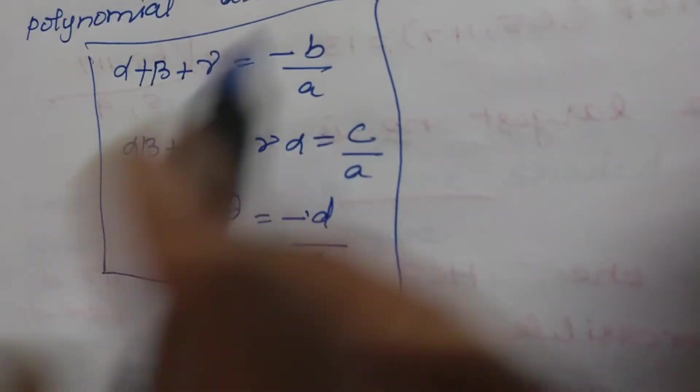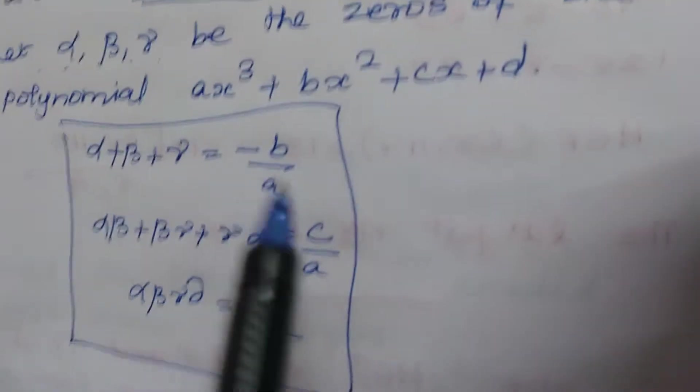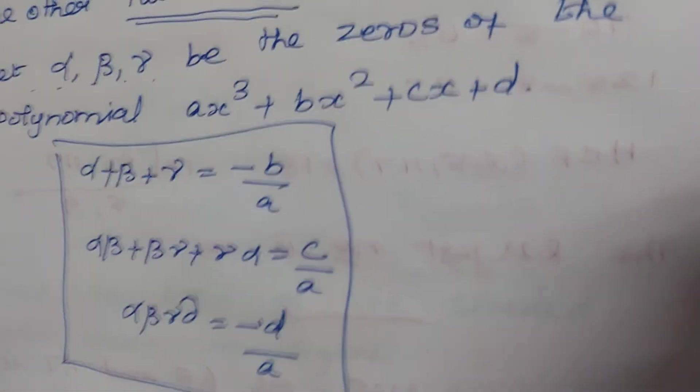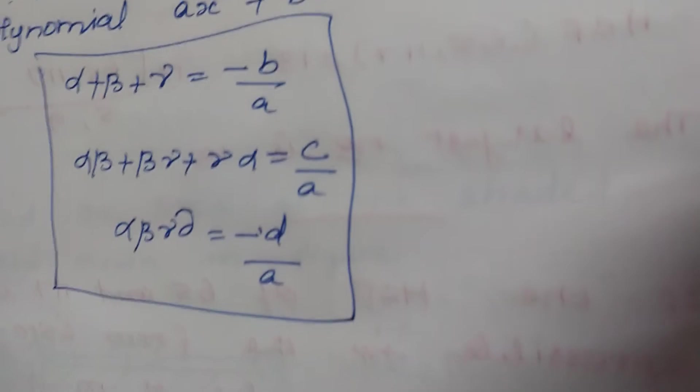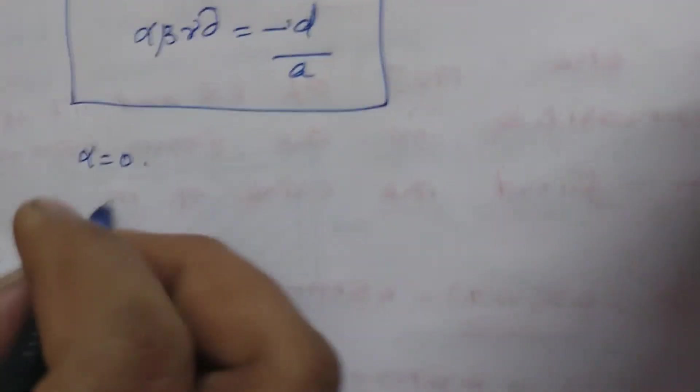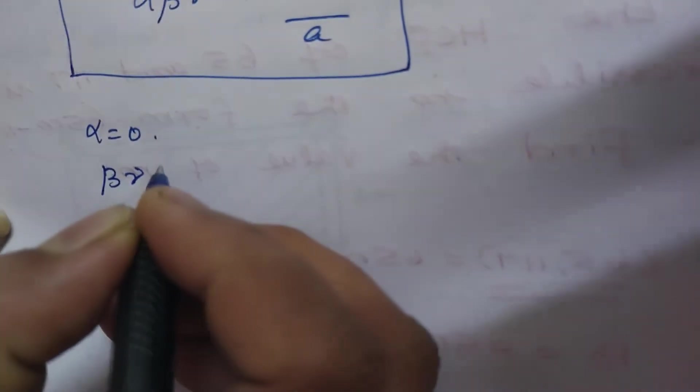So here it is given that one of the roots — I take that root as alpha. Alpha = 0. So we have to find the product of the other two zeros. Therefore we have to find beta·gamma.